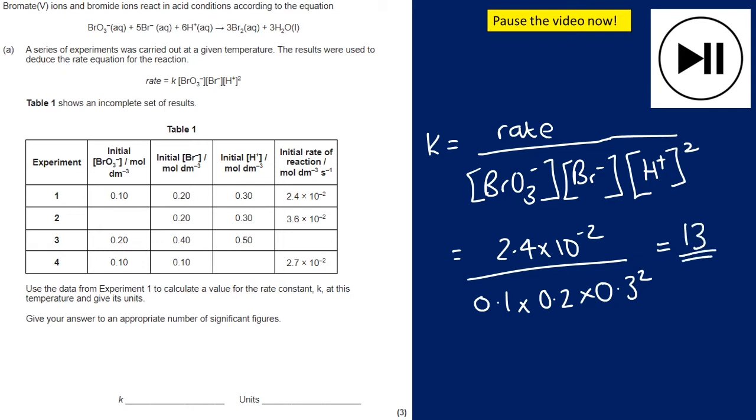That's worth two marks. For the third mark we need to deduce our units. It's going to be moles per decimeter cubed on the top, seconds to the minus one, and the total order on the bottom is one, two, three, four. So I'm adding those indices together, so it's moles per decimeter cubed to the power of four on the bottom. To bring that up the top, it's one take away four, which is minus three.